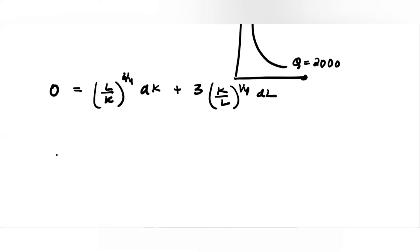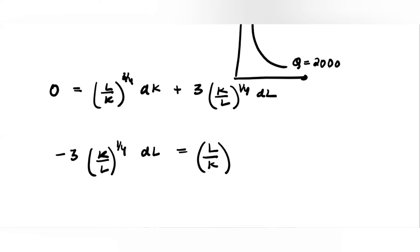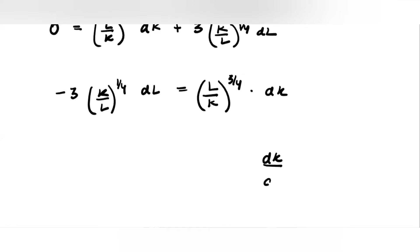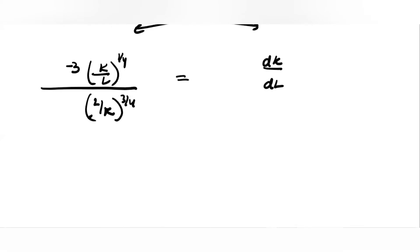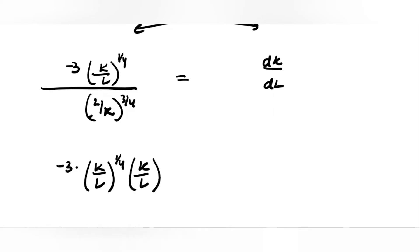Setting dq equal to 0: (l/k)^(3/4) dk plus 3(k/l)^(1/4) dl equals 0. Rearranging: minus 3(k/l)^(1/4) dl equals (l/k)^(3/4) dk. Solving for dk by dl: it equals minus 3 times (k/l)^(1/4) times (k/l)^(3/4), reciprocating the denominator to bring it to the numerator.